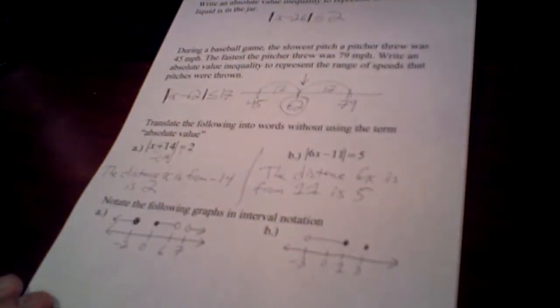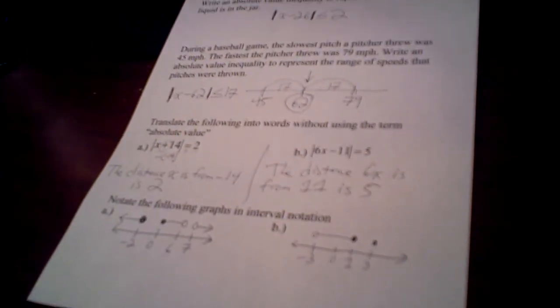Alright, a couple more on interval notation. Just a reminder, we've done a lot over these videos, but it has to go from smallest to biggest. When we have solid circles, you use a bracket. When we have open circles, you use the parentheses.